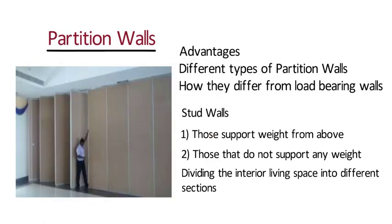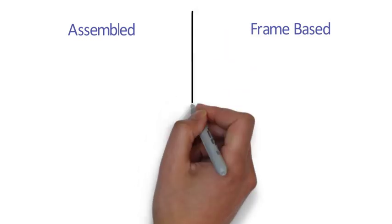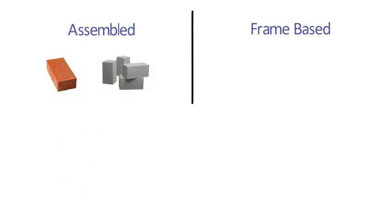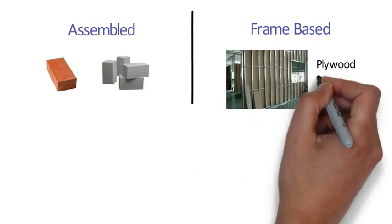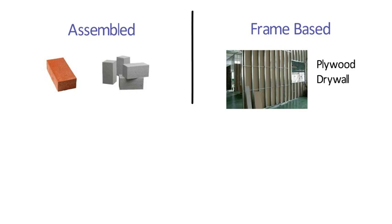There are different types of partition walls, which vary in strength, durability, and appearance. In general, all interior partitions are divided into two groups: assembled and frame-based. The first group includes partitions made of building materials like bricks, blocks, etc. In the second group, we refer to partitions constructed on a frame base, to which the selected material like plywood, drywall, etc. is attached.